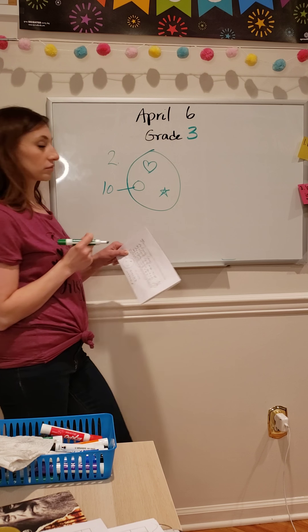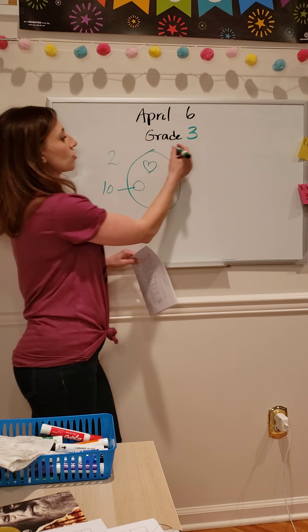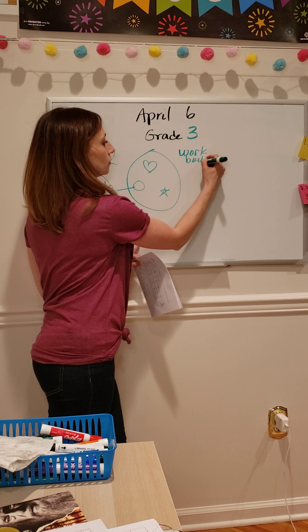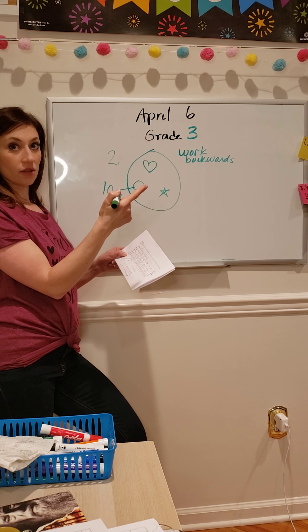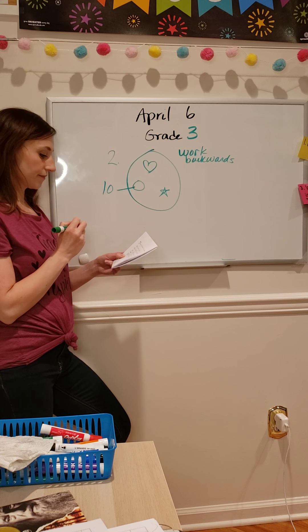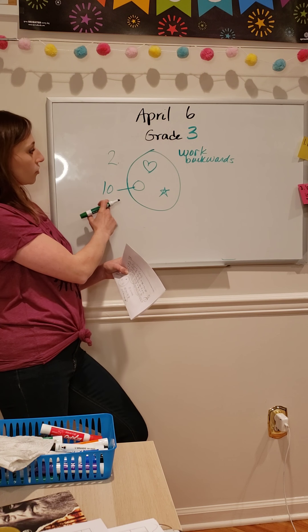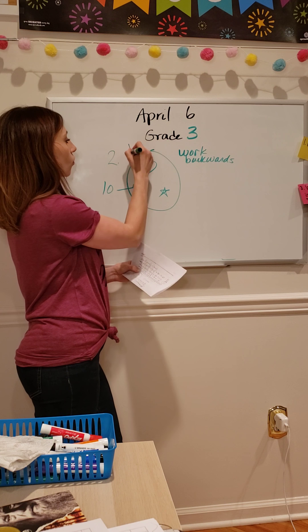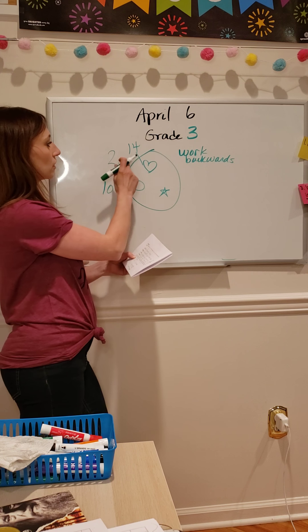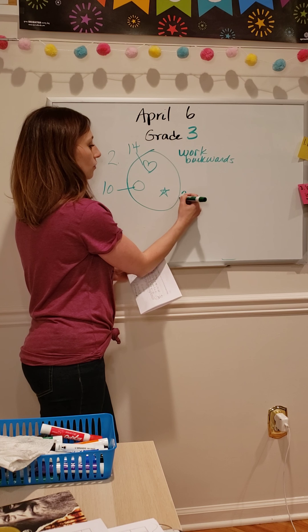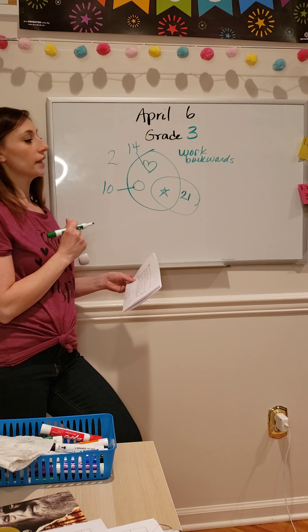I'm going to label my picture with what I already know — 10 circles — and work backwards as a strategy. Starting from the last sentence, she had 10 circles. She had 4 more hearts than circles, so 10 plus 4 is 14 hearts. She had 7 more stars than hearts, so 14 plus 7 is 21. My final answer for number 2 is 21 stars.